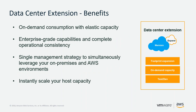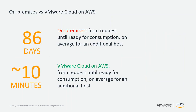The data center extension benefits include: on-demand consumption with elastic capacity, enterprise-grade capabilities and complete operational consistency, a single management strategy to simultaneously leverage on-premises and AWS environments, and the ability to instantly scale host capacity as needed. On-premises, the average time from request to ready-for-consumption for an additional host is roughly 86 days. With VMware Cloud on AWS, that same process takes roughly 10 minutes or less.